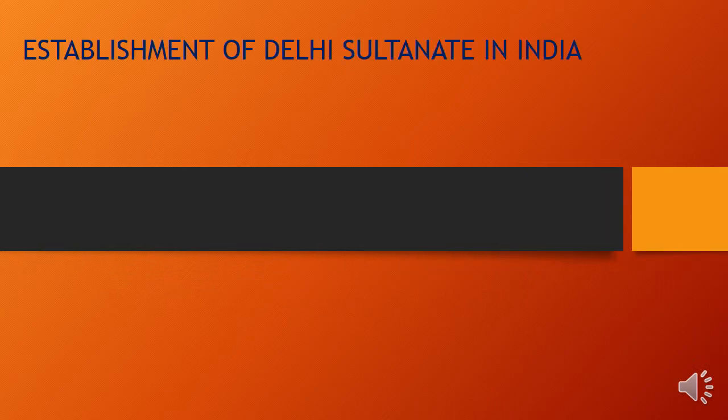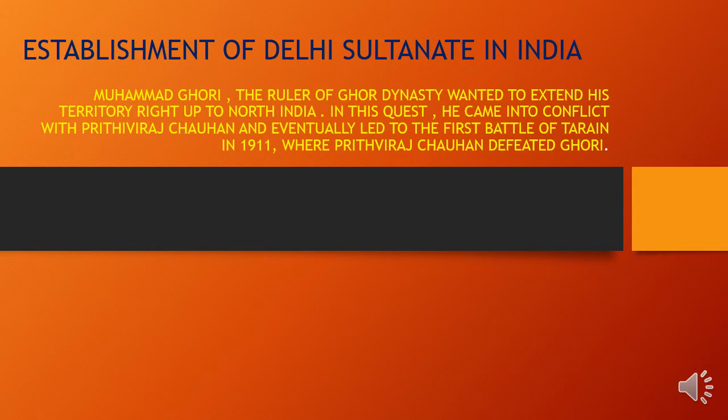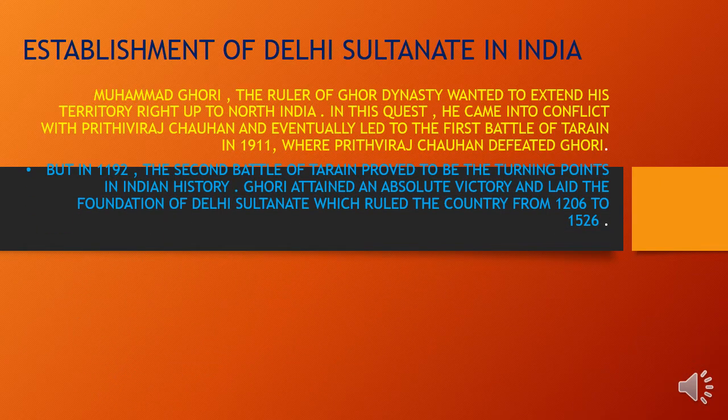To start with the topic, I would like to give a brief view on the establishment of the Delhi Sultanate in India. Muhammad Gauri, the ruler of the Ghauri dynasty, wanted to extend his territory right up to North India. He came into conflict with Prithviraj Chauhan, leading to the first battle of Tarain in 1191, where Prithviraj defeated Gauri. But in 1192, the second battle of Tarain proved to be the turning point in Indian history — Muhammad Gauri attained an absolute victory and laid the foundation of the Delhi Sultanate, which ruled from 1206 to 1526.